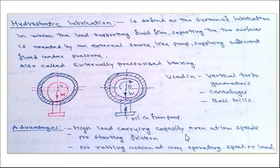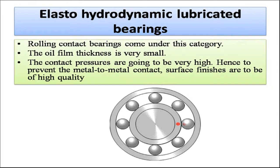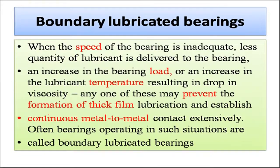Elasto-hydrodynamic lubricated bearings include rolling contact bearings. An oil film is present but very small in thickness. Contact pressures are very high, so to prevent metal-to-metal contact, surface finish must be of high quality. In boundary lubricated bearings, when speed is inadequate, lubricant quantity is insufficient, bearing load increases, or lubricant temperature rises causing a drop in viscosity, any of these may prevent thick film formation and result in continuous metal-to-metal contact.